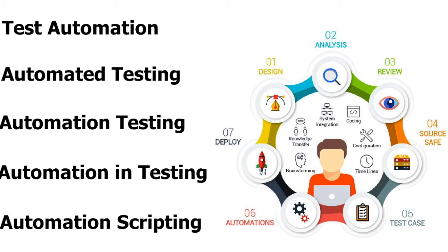This includes creating a proof of concept, using version control, deciding what kind of automation scripts to use, keeping your code safe, automating the test cases, and finally scripting. Once the script is in place you deploy, and you have an automation solution ready that transforms manual or functional test cases into automation test cases.